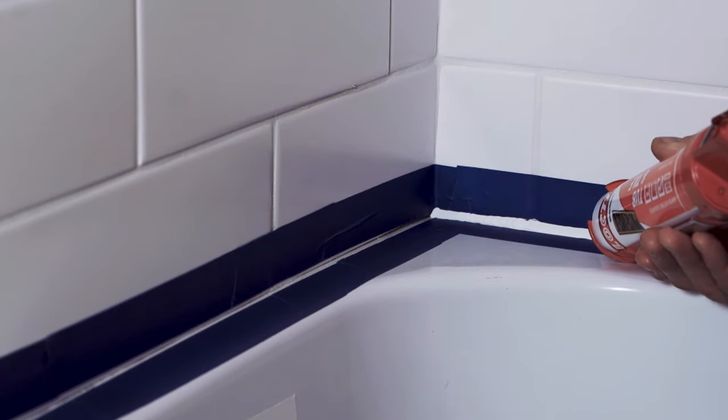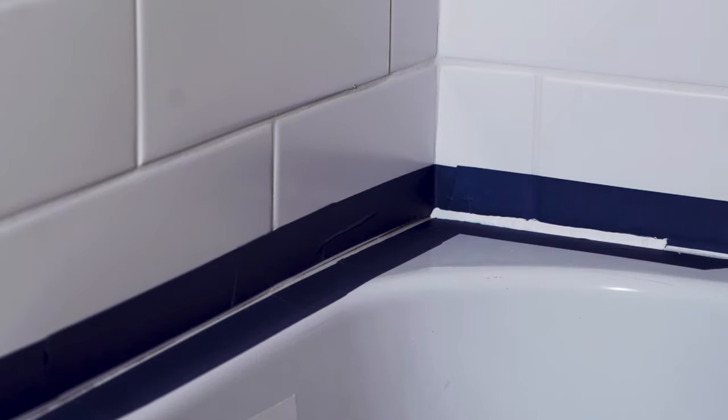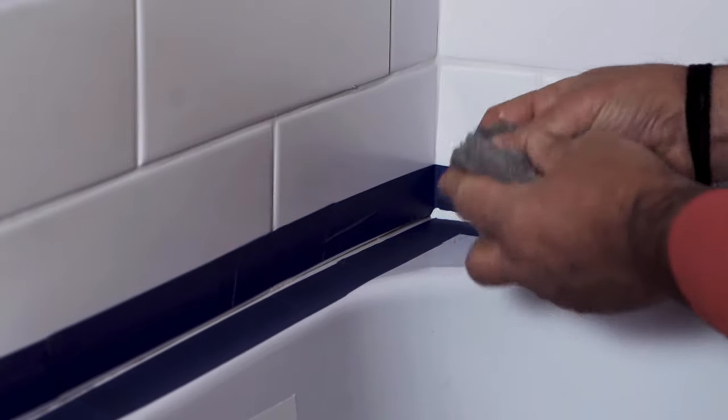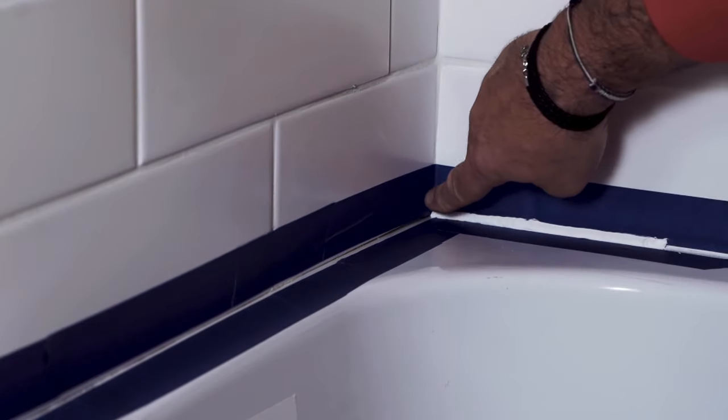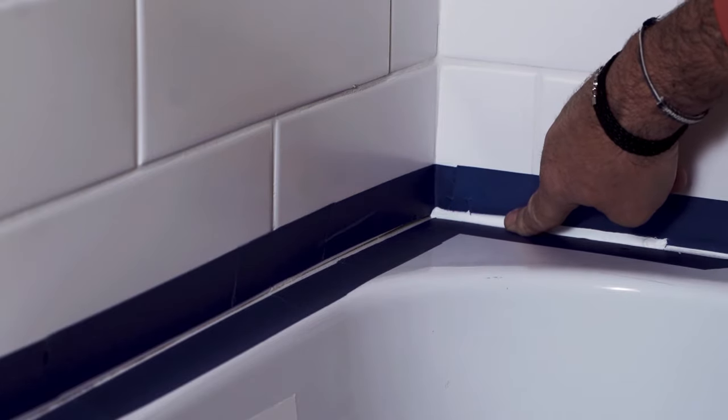And you want to just work in small sections. So once that's applied, pull that caulk gun away and with your finger a little bit wet from that rag, you want to take your finger and kind of pull that across to work that in.